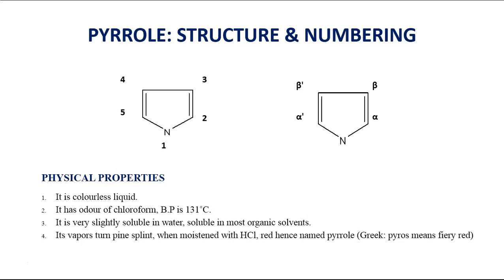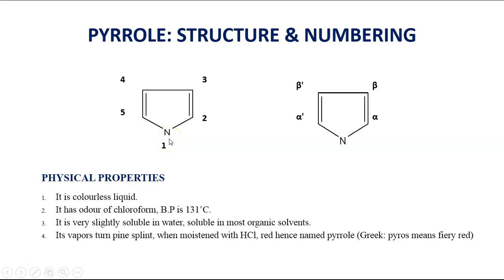Let us see the structure of Pyrrole and its numbering system. We can see here a 5-membered ring containing a nitrogen atom is called Pyrrole. It contains 1 nitrogen atom and 4 carbon atoms. The numbering will start from the heteroatom. This nitrogen will get number 1 position, this carbon will get 2, this is 3, 4 and 5.